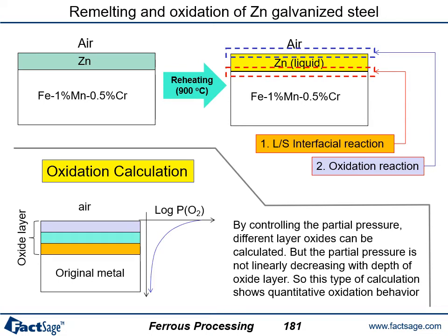This slide shows how to apply thermodynamic calculation for the galva-annealing process. After the galvanizing process, you have a zinc coat on the surface of your steel, and then you reheat it to around 900 degrees Celsius. The liquid zinc can chemically react with the substrate, changing some of the chemistry on the surface and also the melt chemistry of the liquid zinc. This liquid can further react with air, causing oxidation at the surface. We want to do a two-stage calculation in this case.